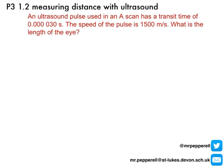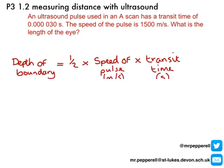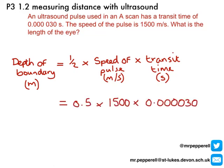You've finished already — that was quick! My first step was to write down the equation: the depth of the back of the eye equals 0.5 multiplied by the speed of the pulse in metres per second, multiplied by the transit time in seconds. Substituting in: 0.5 × 1,500 × 0.000030, which gives 0.0225 metres, or 22.5 millimetres. Think about it — could that be a reasonable size for an eye? It's quite a small eye based on the numbers I chose, but yes, it could be. If you get something like 2.68 metres, obviously that's not the size of an eye, so always think about the number you get.